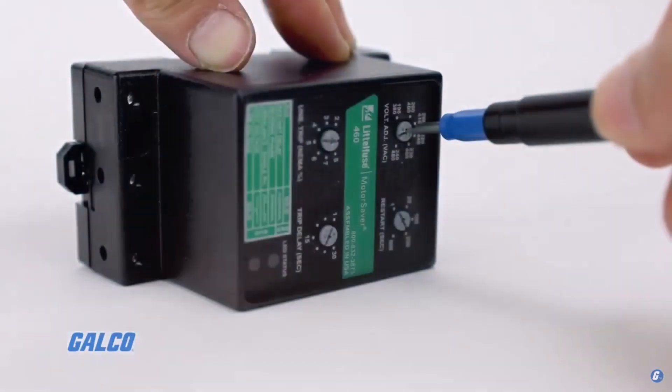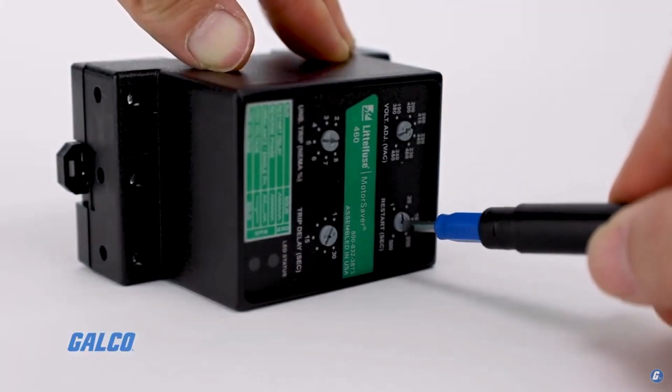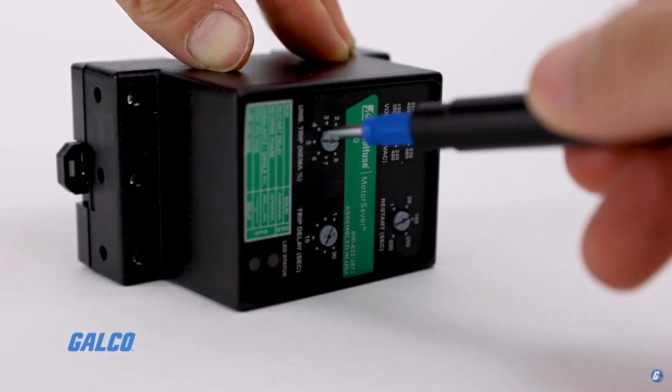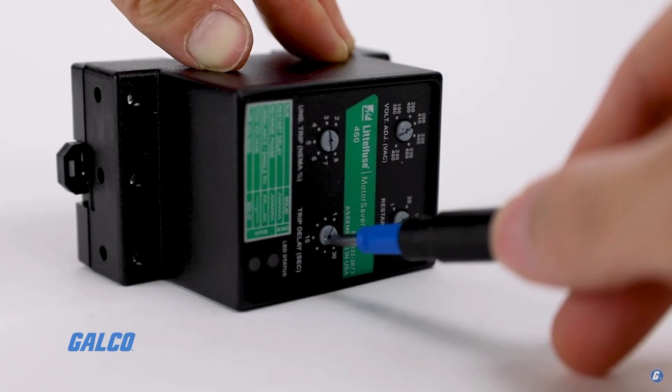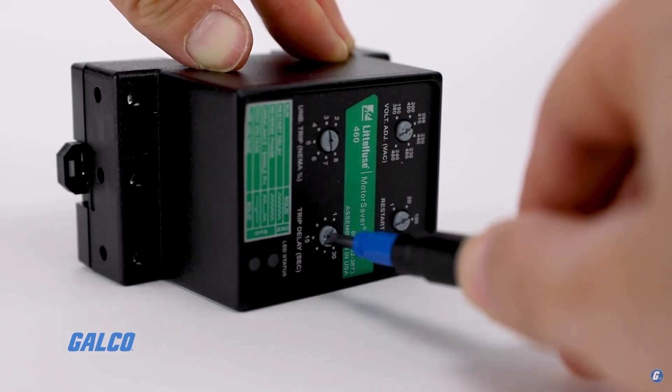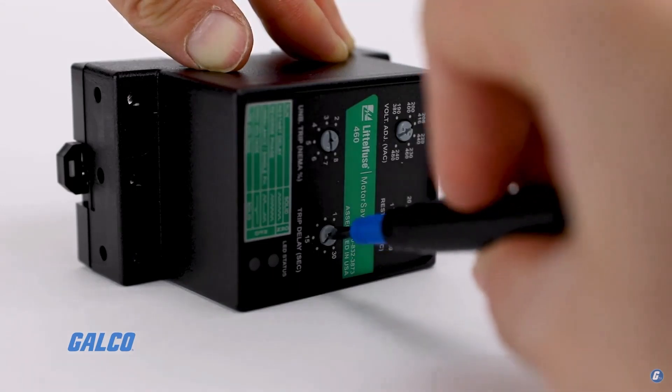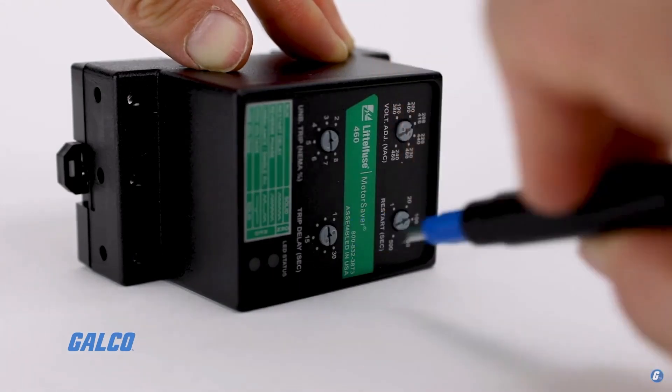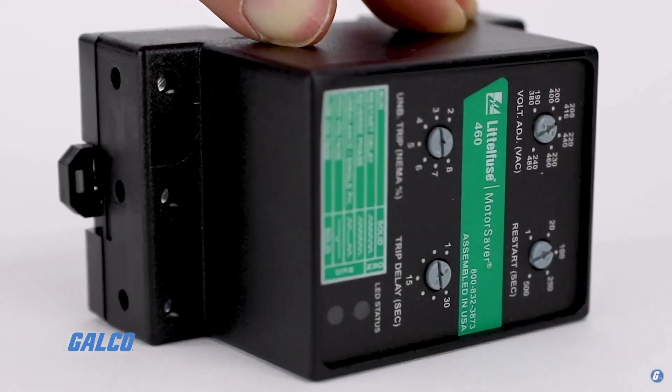All models feature a 1 to 30 second adjustable trip delay, a 1 to 500 second adjustable restart delay, an adjustable voltage unbalanced trip point, a form C contact, and LED indicators to quickly see operating status.